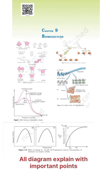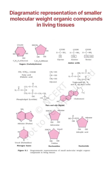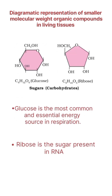Chapter 9 Biomolecules — all diagrams explained with important points. Diagrammatic representation of smaller molecular weight organic compounds found in living tissues: sugar and carbohydrates.